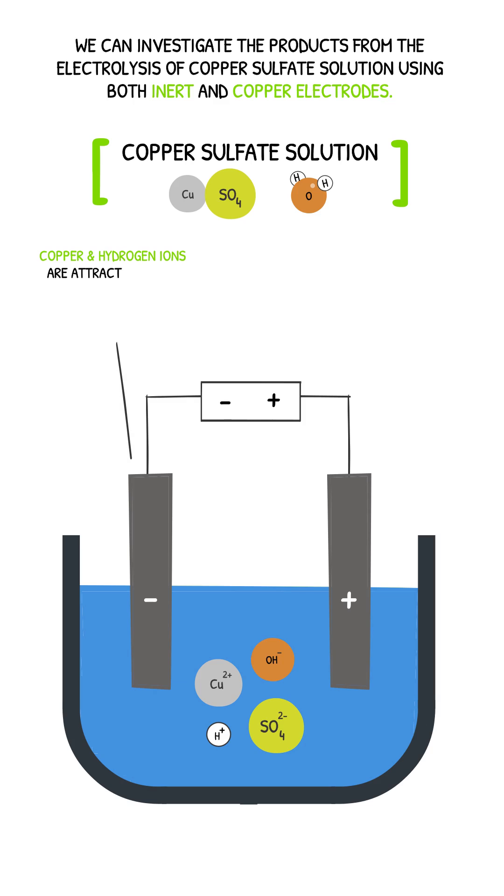The copper and hydrogen ions are both attracted to the cathode. However, only the copper will be discharged as it is less reactive than hydrogen.